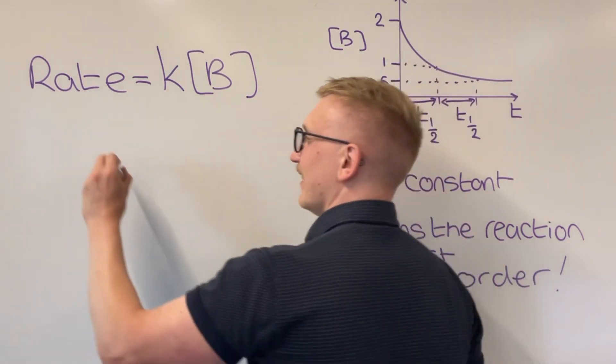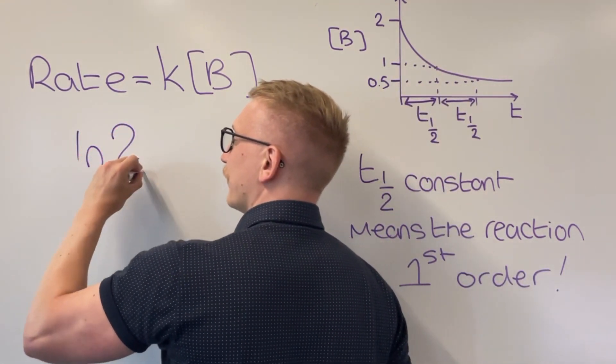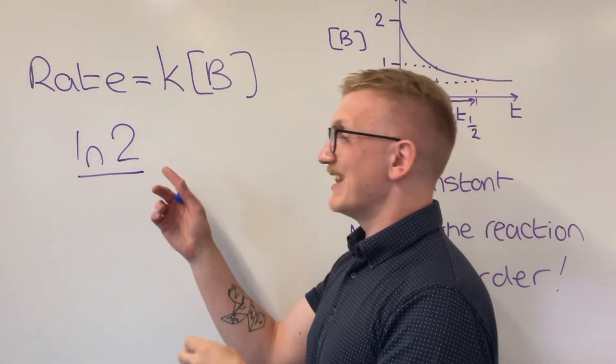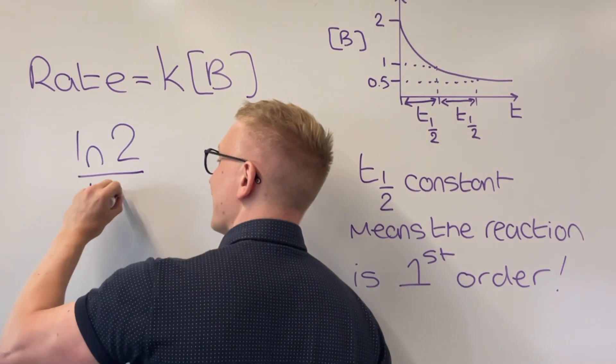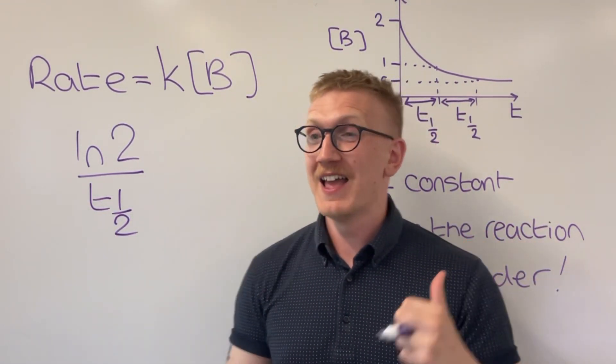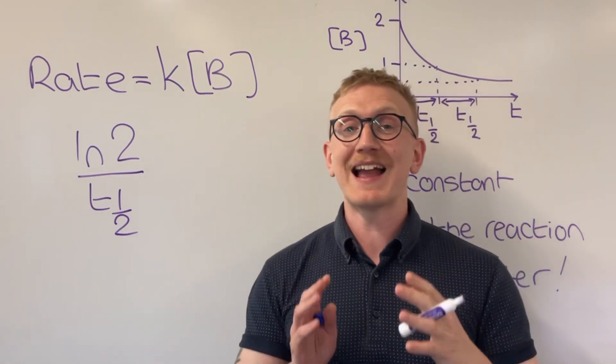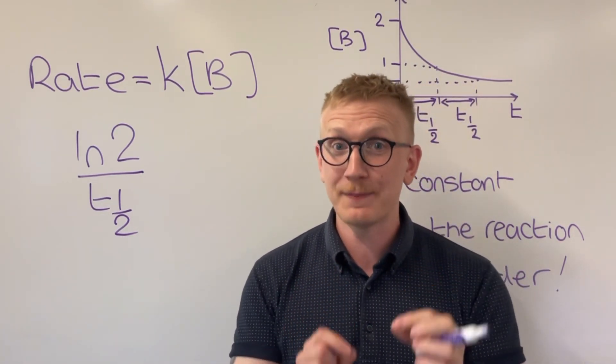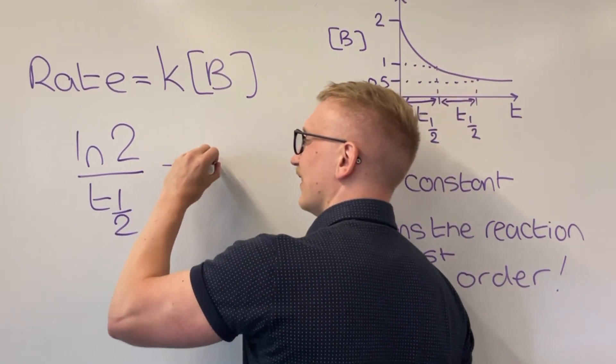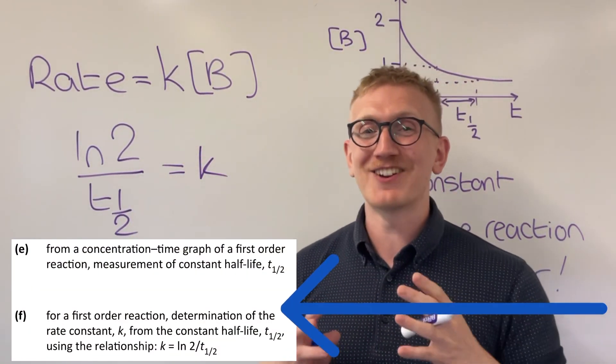The way we do this is by doing ln of 2, so that's ln or natural log, however you want to describe that, divided by the half-life value. That constant half-life value that we got from the graph. This only works if the reaction is first order, so please be very careful about how you throw this around. But by doing this, we get a value of the rate constant k.